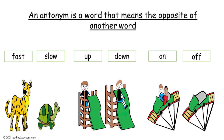Now introduce some more antonyms to kids. We have fast is the opposite of slow, up is the opposite of down, and on is the opposite of off.